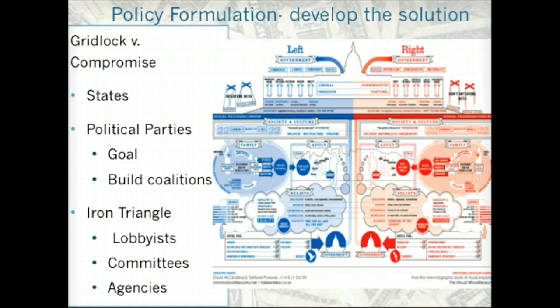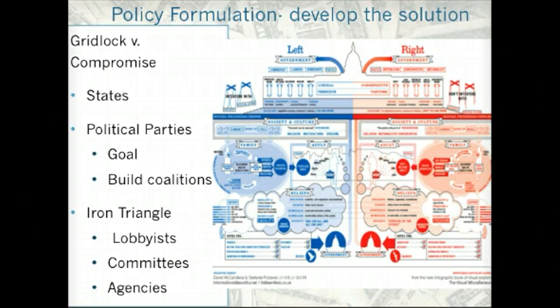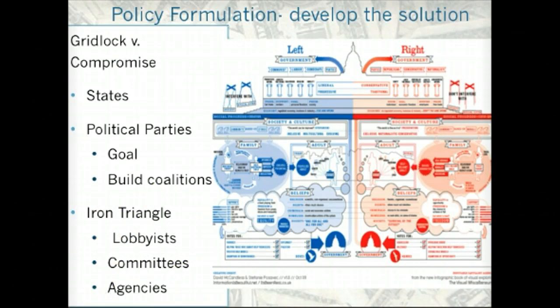Congress members who sit on committees receive information and campaign contributions from these industries or interest groups, and some will later go on to work for the industry. So their solution to a problem like terrorism would be to invade Iraq, because it will benefit the lobbyists that support them. Then agencies — like the Department of Defense — are going to hire the private companies that do the contract work for the war in Iraq. So all of them are going to have this mindset that maybe the best way to counter terrorism would be to invade Iraq, and then it's hard to reverse that as the accepted solution.